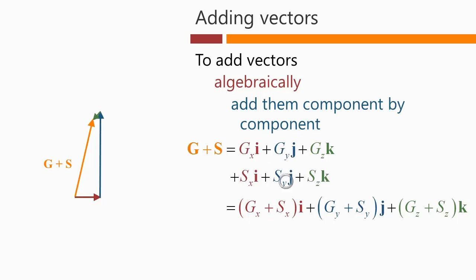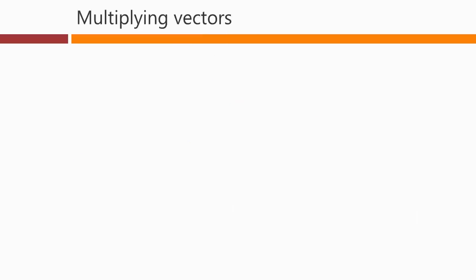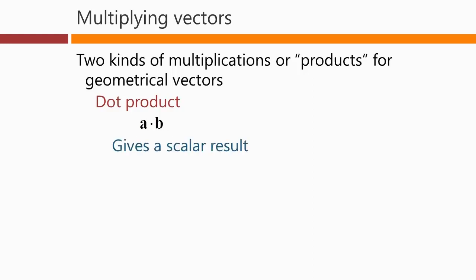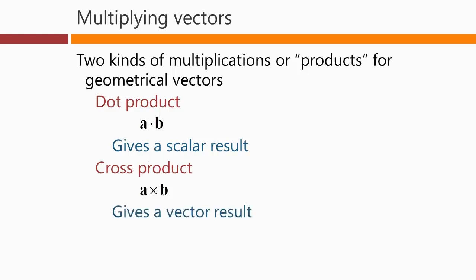Now, having added vectors, we want to know if we can multiply vectors, and this turns out to be somewhat more complicated. There are two kinds of products we can do for geometrical vectors. The first is called the dot product, A dot B, which gives us a scalar result — a simple number. The cross product, A cross B, gives us a vector. Note that the dot and the cross here mean different kinds of multiplication.